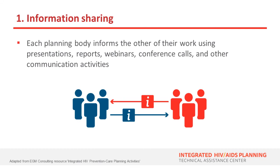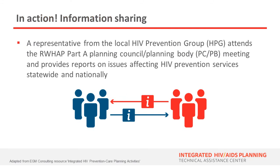Here are five different types of integrated planning models a jurisdiction can pursue. The first is basic information sharing — a situation where each planning body informs the other of their work using presentations, reports, webinars, conference calls, or other informal communication activities. In practice, this might mean a representative from a local HIV prevention group attends a Part A planning council meeting and provides a report on issues impacting HIV prevention services statewide and nationally.